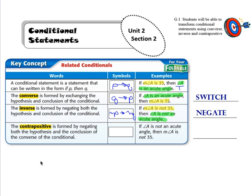Contrapositive is formed by negating both the hypothesis and the conclusion of the converse of the conditional. And so what that looks like is we basically are switching and negating. So it becomes not Q implies not P. So if you take a look here, we have A is not an acute angle. And then therefore, A is not 35. So that's switch and negate.